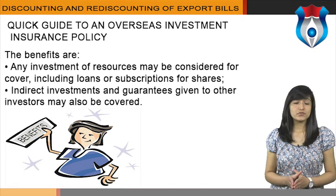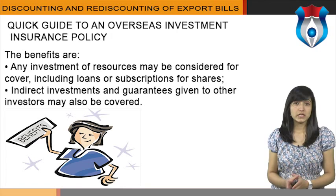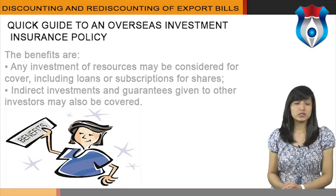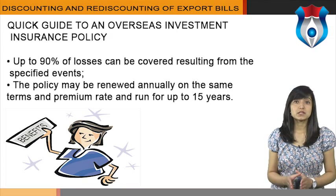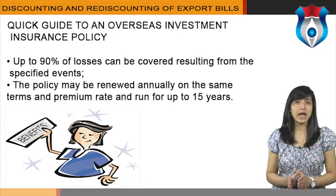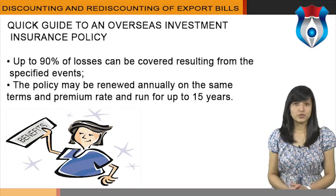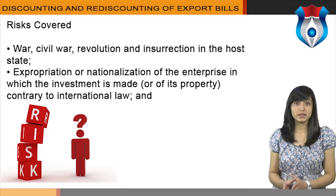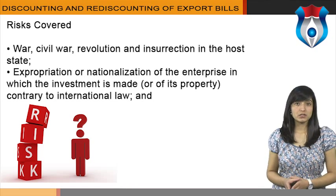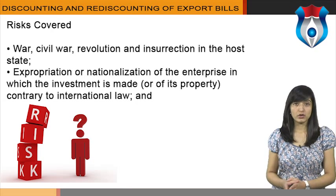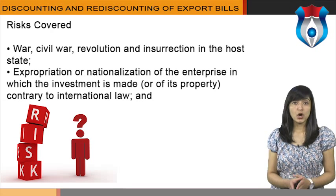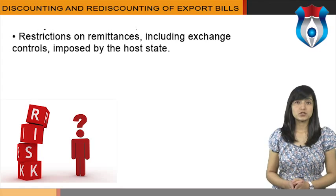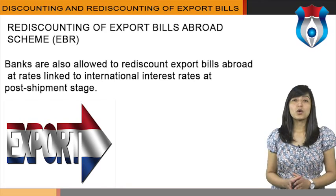The benefits are: any investment of resources may be considered for cover, including loans or subscriptions for shares. Indirect investments and guarantees given to other investors may also be covered. Up to 90 percent of losses can be covered resulting from the specified events. The policy may be renewed annually on the same terms and premium rate, and can run for up to 15 years. Risks covered include war, civil war, revolution, and insurrection in the host state; expropriation or nationalization of the enterprise or its property contrary to international law; and restrictions on remittances including exchange controls imposed by the host state.